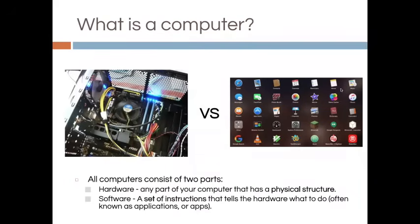All computers consist of two parts. Hardware — any part of your computer that has a physical structure. Software — a set of instructions that tells the hardware what to do, often known as applications or apps.